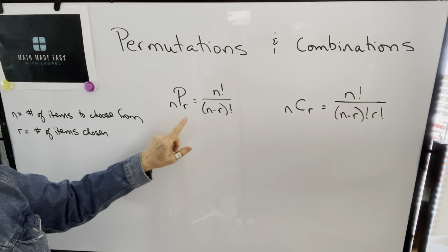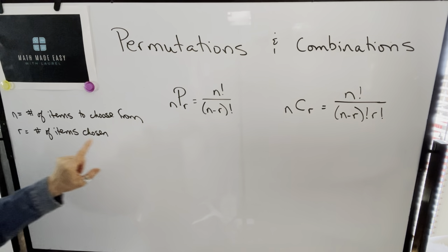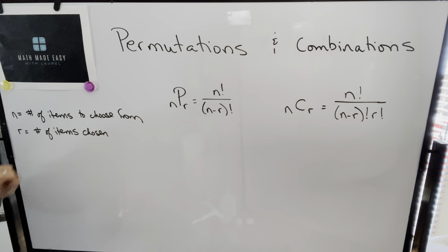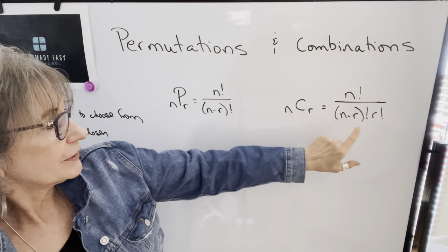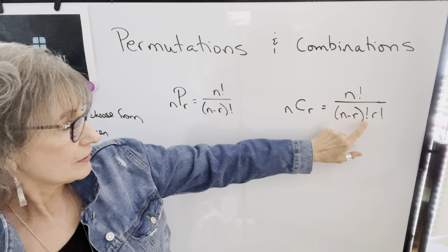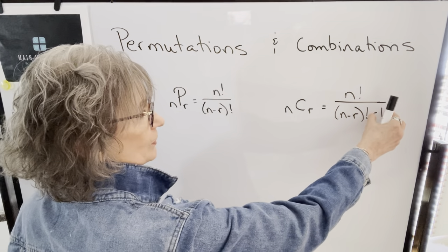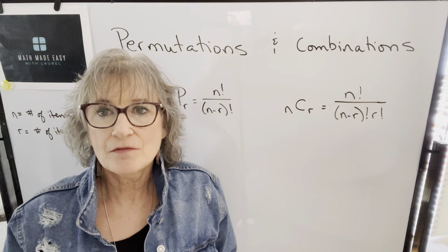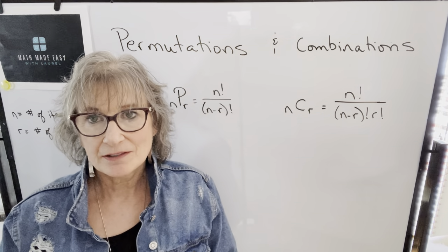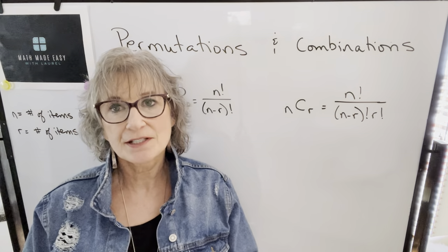The two formulas we looked at for permutations: nPr is n factorial over n minus r factorial, where n is the number of items to choose from and r is the number of items chosen. The combination formula is very similar — nCr is n factorial divided by n minus r factorial, and we also have an r factorial in the denominator. The problem students have is knowing what formula to use when, because it gets trickier with permutations since sometimes there will be repetition and sometimes there won't.